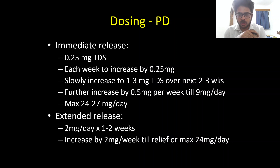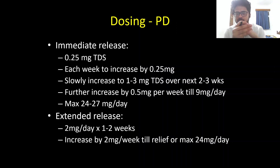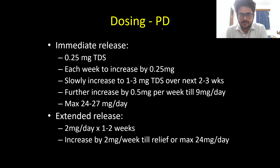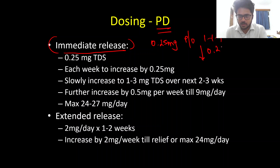Whether for Parkinson's disease or restless leg syndrome, the key when adding a dopamine agonist is to slowly uptitrate the dose. If you do not increase the dose slowly, dopamine agonist-related side effects like postural hypotension, giddiness, nausea, and vomiting will be significantly disabling. For Parkinson's disease with the immediate release formulation of ropinirole, we start at a dose of 0.25 mg orally three times per day.